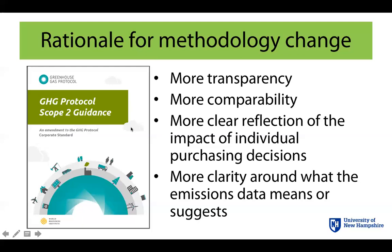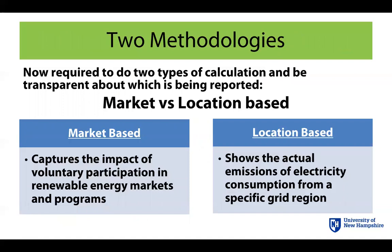We care about what the Greenhouse Gas Protocol says because they are the arbiter of international carbon accounting standards. This isn't a UNH thing or a Second Nature thing — it's an international thing. Our goal has always been to develop tools and reporting methodologies that are in line with global standards. This new guidance came out a little over a year or two ago, and what it says is that entities should calculate their scope 2 emissions in two different and specific ways, and be able to report both of those totals, specifying which method was used.